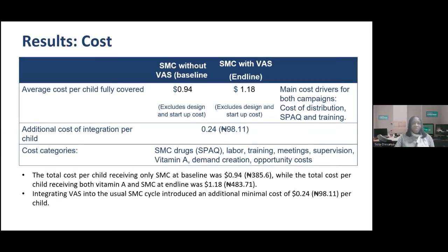On the cost of implementation: the total cost per child receiving only SMC at baseline was about 94 cents, approximately 385–386 Naira. The total cost per child receiving both vitamin A and SMC at end-line was $1.18. So integrating vitamin A into the usual SMC cycle introduced an additional minimal cost of just about 24 cents — less than a hundred Naira per child.